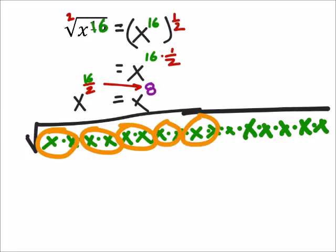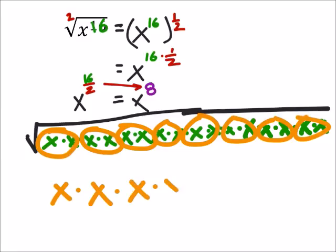And how many pairs would we have? Well I get 8 of those pairs, right? So I end up with x times x times... 8 of these x's. 1, 2, 3, 4, 5, 6, 7, 8.